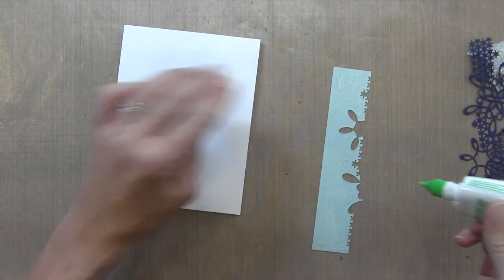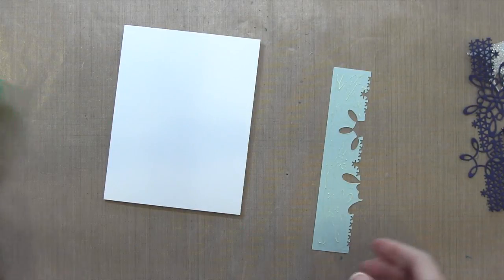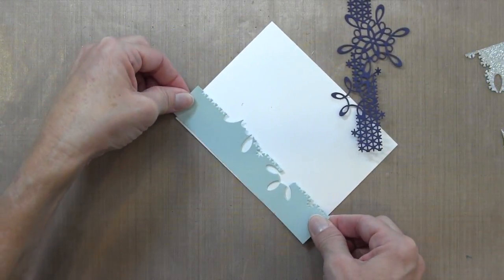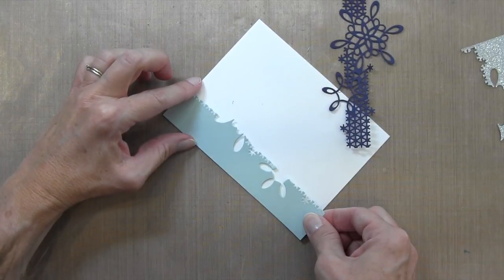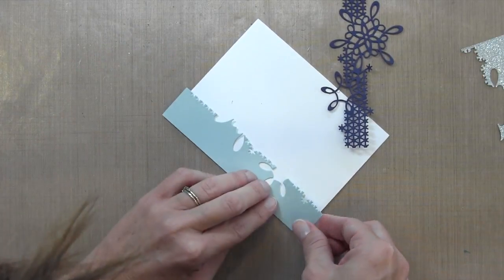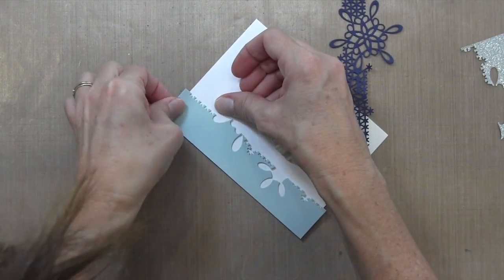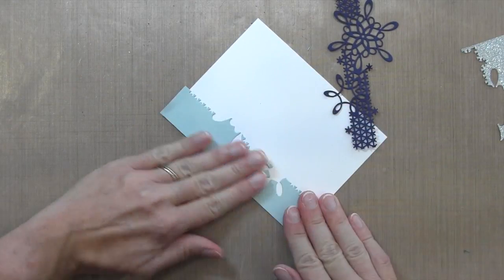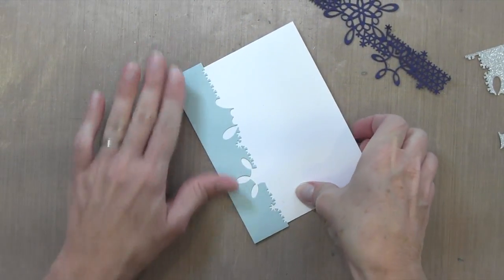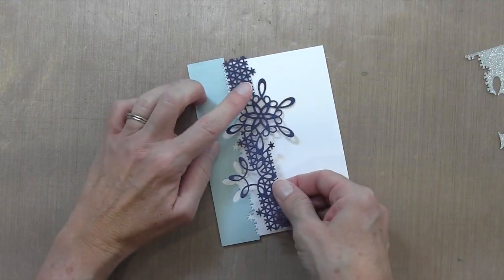The first one is the Soft Sky. I'm using Tombow Mono Multi glue so I can get into all the little details and have some time to move it around before it sticks permanently. You can see I move it around a little, up and down, to make sure it's positioned well.